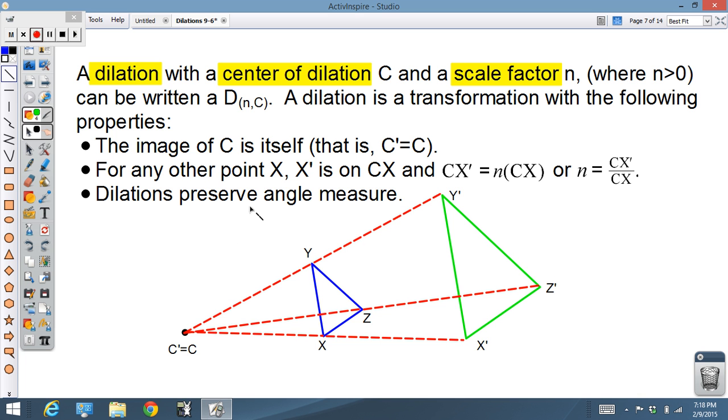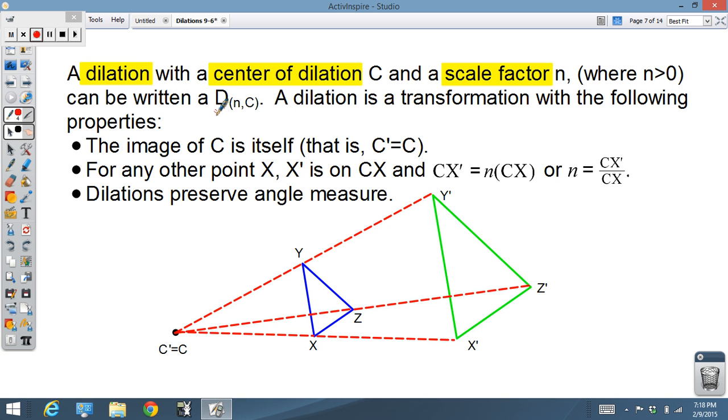This is a dilation. Our center of dilation was what we called C, and our scale factor was whatever we multiplied everything by: two, three, four, half. Now just know that the scale factor, which we can call n, has to be greater than zero. And we write it using a rule that looks like this: D for dilation, n for scale factor, C for the point that represents the center of dilation.